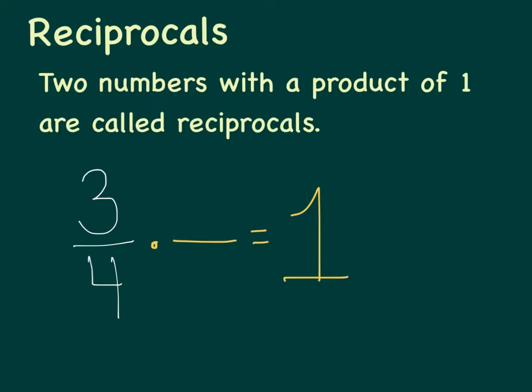Did anybody get an answer of four-thirds? When you take three-fourths and you multiply it by four-thirds, you get an answer of one. So three-fourths and four-thirds are reciprocals. You could show it this way: three-fourths times four-thirds, if you just multiply across, is twelve-twelfths, which just equals one.